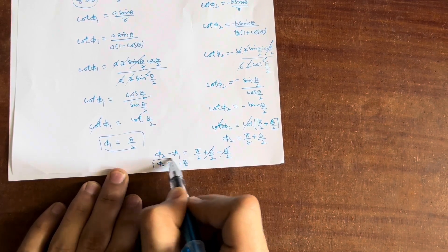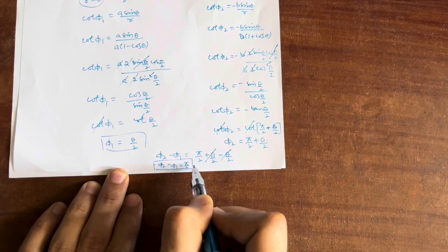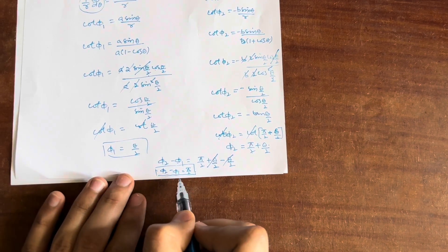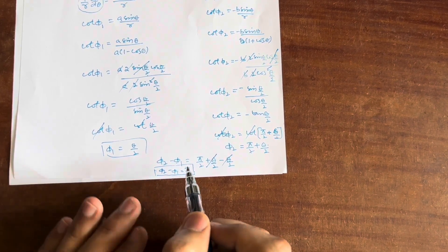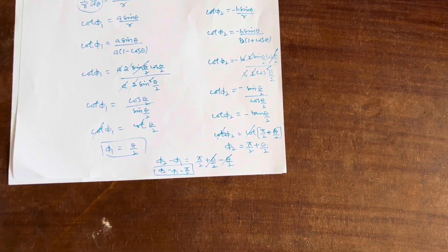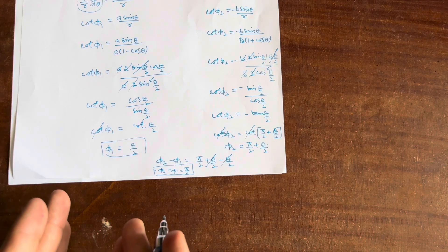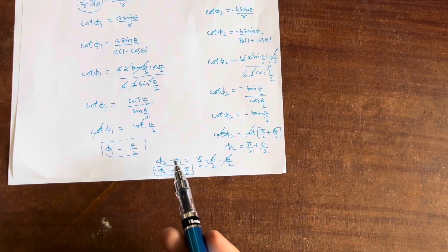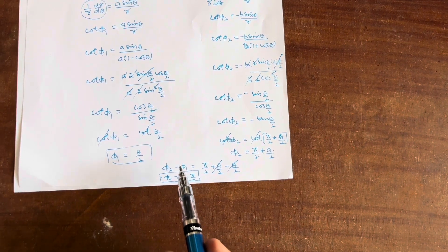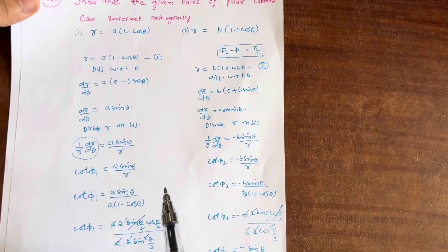This is the correct answer. We can now say that the given pair of polar curves are intersecting orthogonally. This is a super important question — make sure you practice it. It involves simple differentiation and I hope you can do it. Please share this video with all your friends and batch mates.